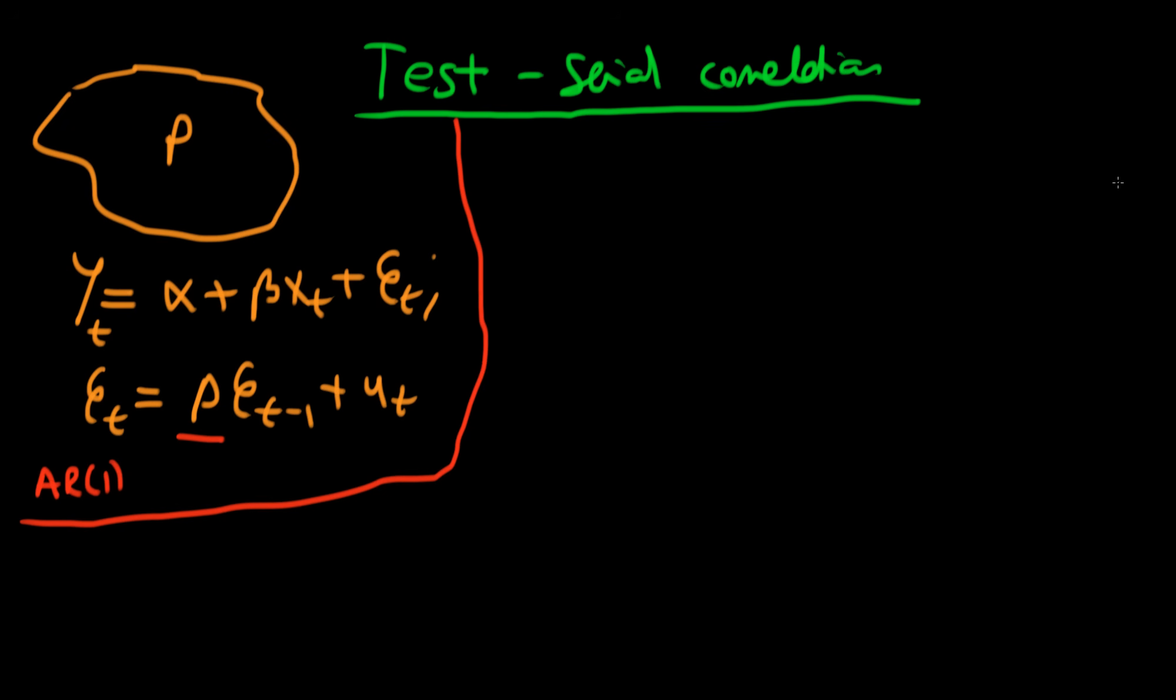How do we test for the presence of serial correlation given that we don't actually observe these errors? A first approach might be to do exactly the same thing as we did when testing for heteroscedasticity.